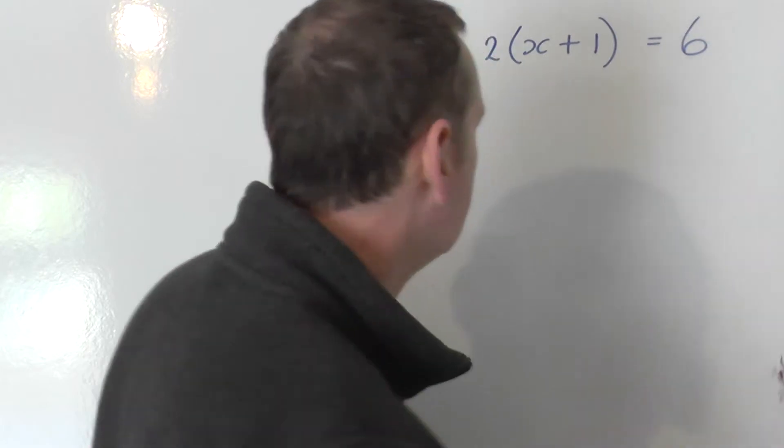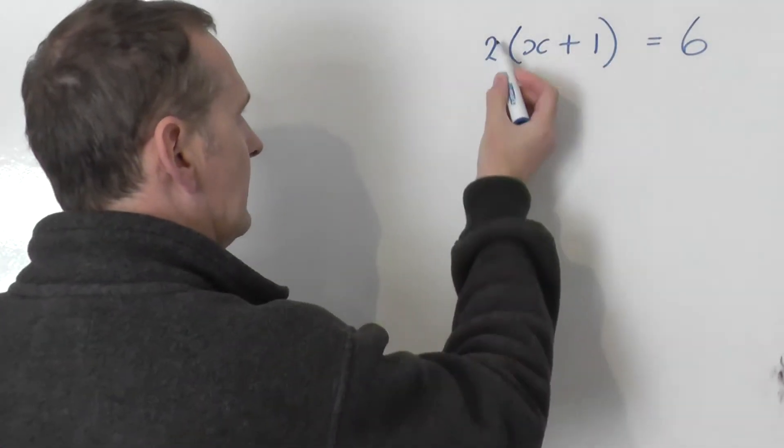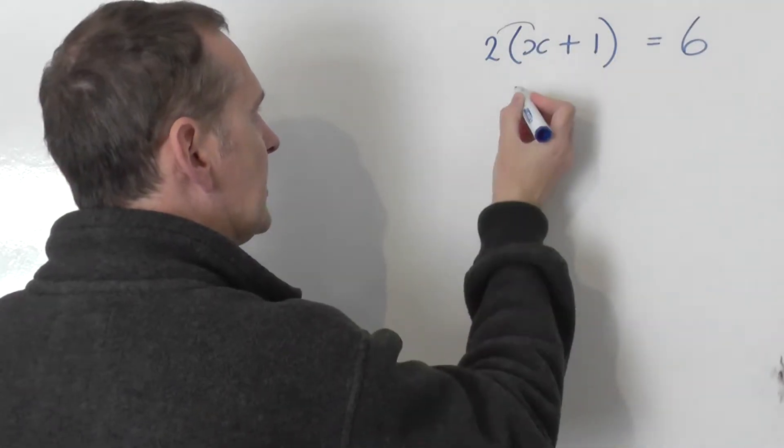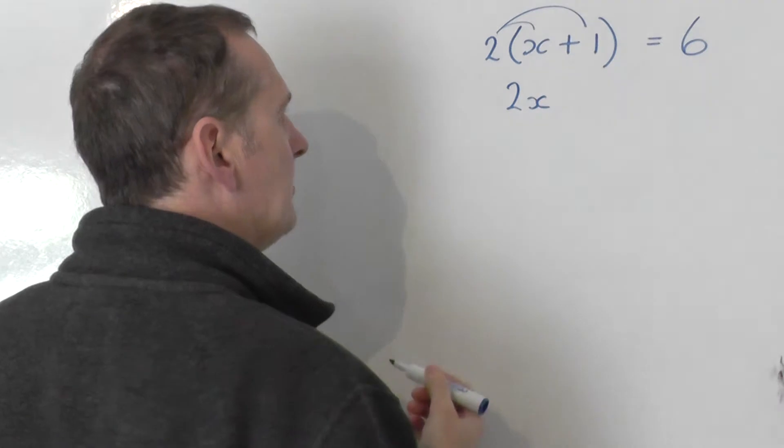Let's expand this bracket out. So 2 lots of x plus 1 mathematically is the same as 2 multiplied by x is 2x, and then we say 2 multiplied by plus 1.